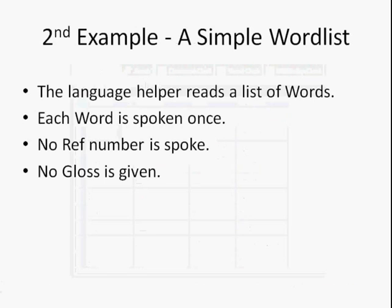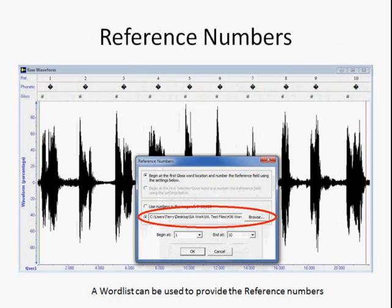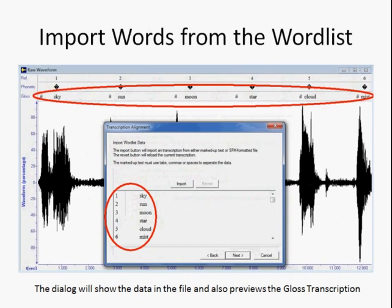The second example is a simple word list — one in which someone has read a list of words. Each word is spoken once, no reference number is spoken, and no gloss is given. Knowing that, it's straightforward to segment the data automatically because there are breath groups between each word. If there's at least a second or so between words, it's possible to easily mark all of them, putting in the word breaks and phonetic symbol representation. Once that's done, the word list can be used to bring in the reference numbers and automatically apply those. Then the gloss transcription is brought in, it's automatically lined up, and when acceptable, you can say it's done.